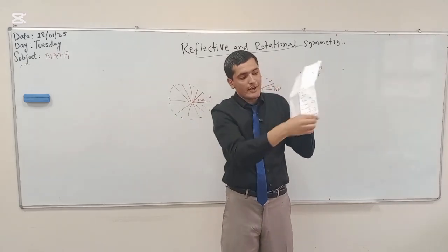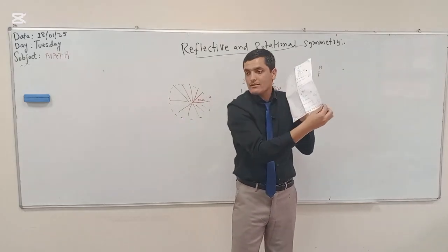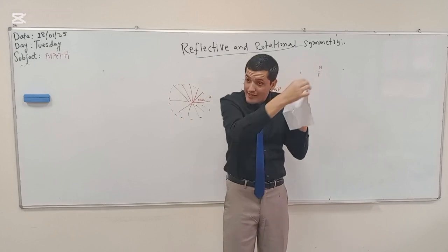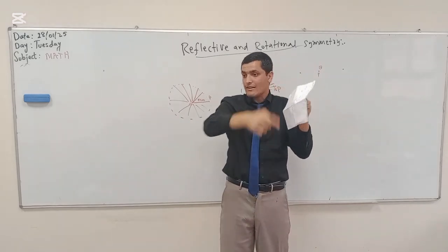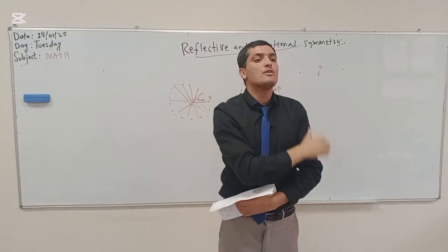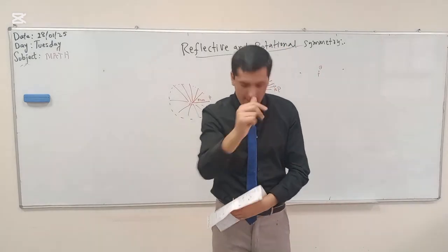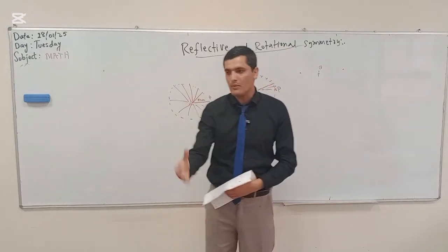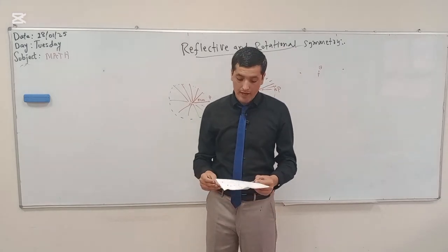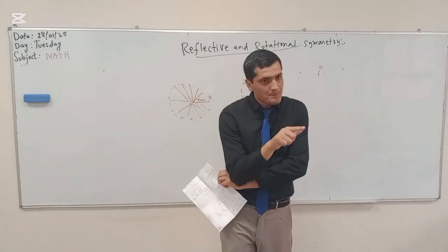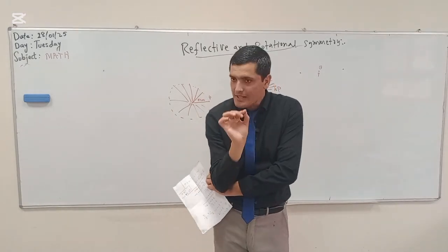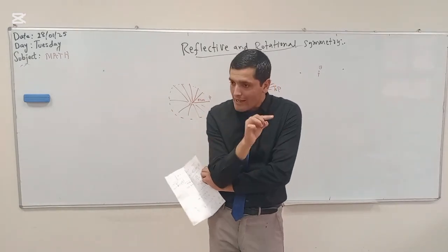If you focus on just one point, you will see it is always at the same distance from the center and it describes a circle. Then look at another point — it also describes a circle of its own. So every point in the object describes a circle, and this is what we call rotational motion.